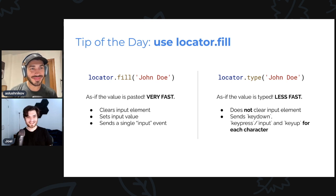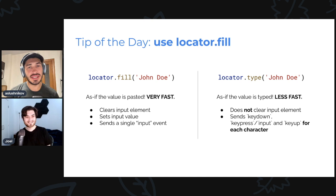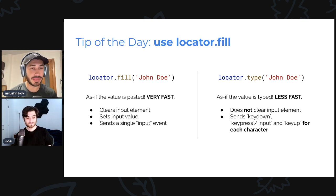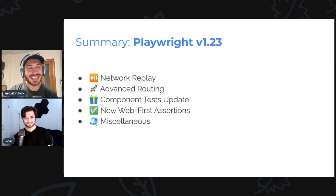I disagree with the tip of the day. Locator.fill is great. But if your JavaScript code listens to key down specifically, you need to use locator.type. So if you know what the key down or key up event is, then you have to use locator.type. If you don't know what's going on, definitely use locator.fill. My recommendation would be to start with locator.fill, and if it doesn't work, it means your form actually listens to key press or key down events. If you have a form, you should definitely use locator.fill, and if it doesn't work, then it's a bug. But sometimes you don't have a form.